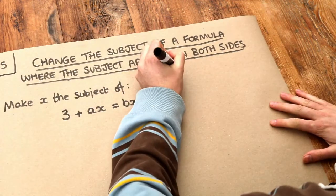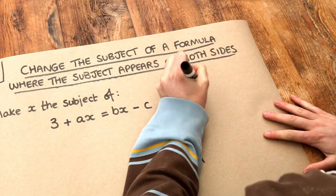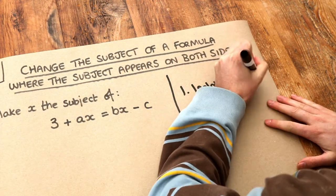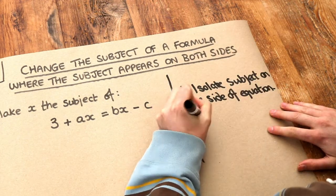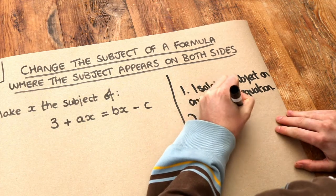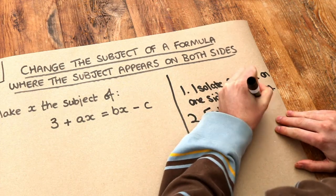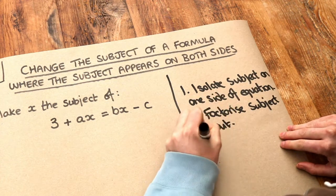Now the strategy when x appears multiple times like it is here is this. First, isolate the subject on one side of the equation only. Secondly, factorize the subject out. This will become clear once we actually do this example. And then finally, divide appropriately.